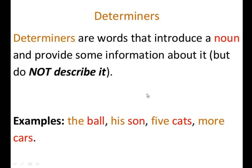The next topic is Determiners. A determiner is a word that introduces a noun and provides information about the sentence — but it does not describe the noun. For example: 'the ball' — it is not describing the ball, just giving information about the noun. Other examples: 'his son', 'five cats', 'more cars'. These are determiners.